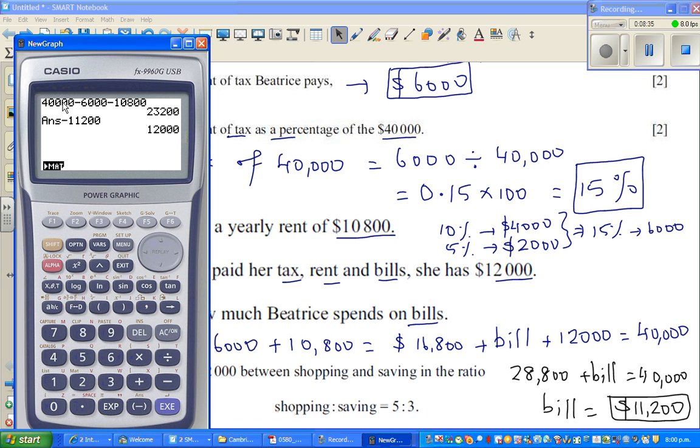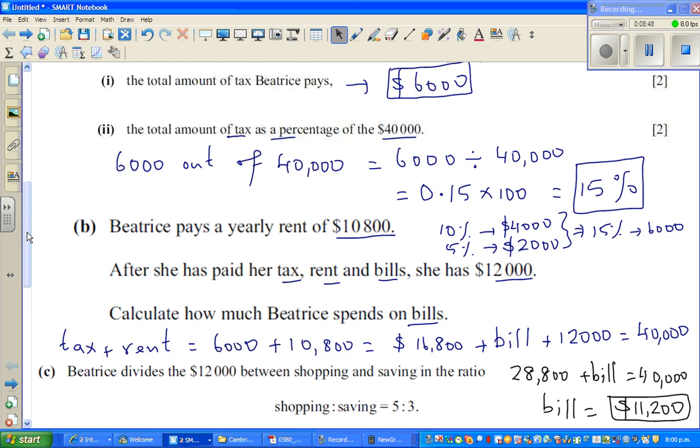So this is total income minus tax, minus rent. From that, this is the balance. So if you take away the bill, this is the balance. And that does tally with our answer. Let's move on.